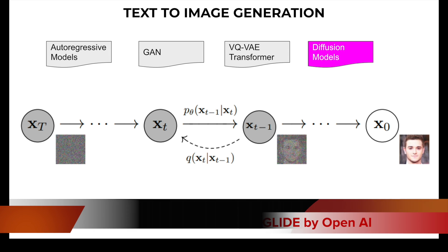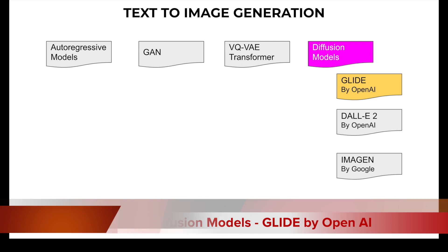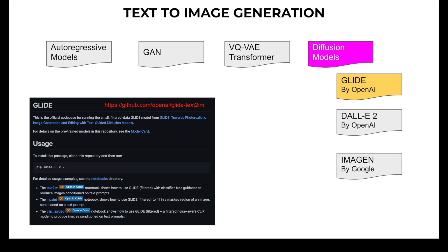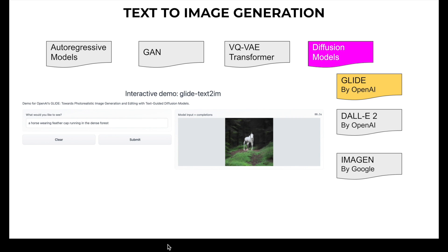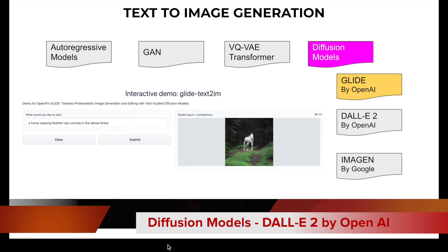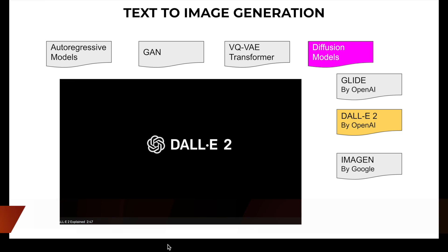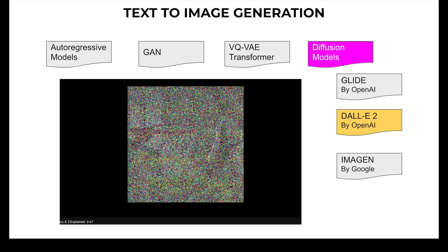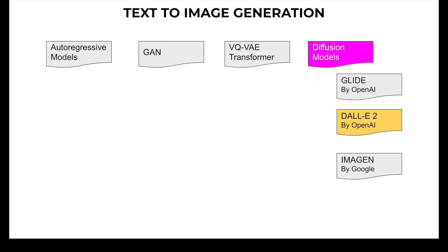Examples of diffusion models include Glide, DALL-E 2, and Imagen. You can find the open-source implementation of Glide at its GitHub repo from OpenAI, and also try the Hugging Face Glide model card for an interactive demo. DALL-E 2 also has a lot of resources available for further learning.